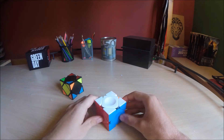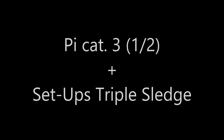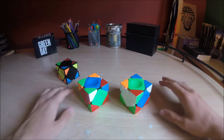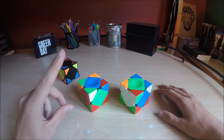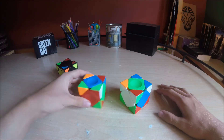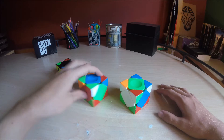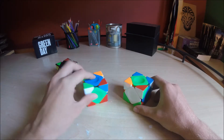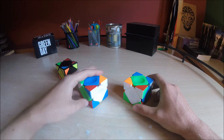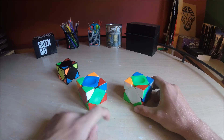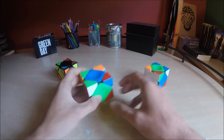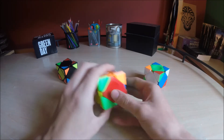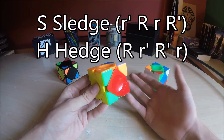Let's do the next cases. In the next two cases we now have the variation of a setup of a triple sledge case. We can see that they have a block on the back. And the difference between these two is that this one the adjacent centers are on the right side, and the other one is on the left side.